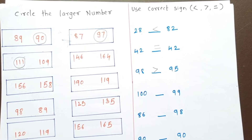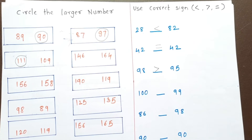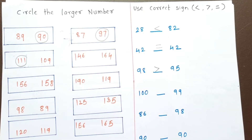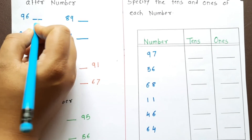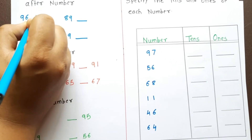You can find more examples in the description box. Next, we must do the worksheet on after number and before number. 96 — the after number is 97. 89 — the after number is 90.